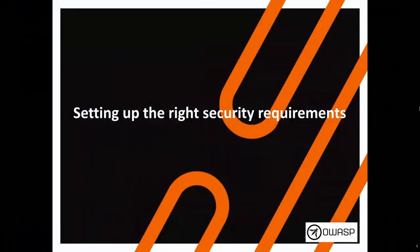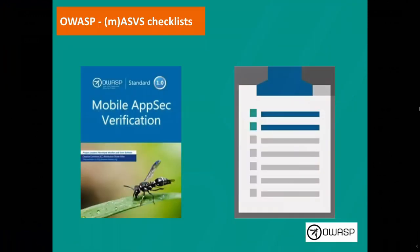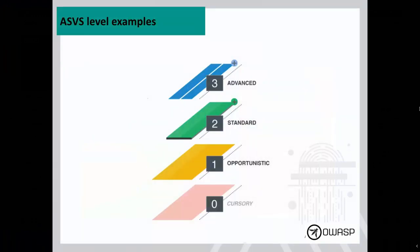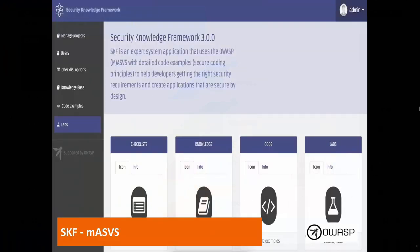The only thing I want to rant about is the importance of setting up the right security requirements — without this you're really lost, with no guidance, no compass, just floating. In SKF we use other great OWASP projects: MASVS and the ASVS, which are a good starting point for your security requirements. The ASVS has different levels — Level 1 if you're just starting out, Level 3 for mission-critical applications.